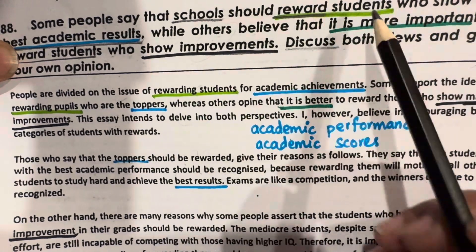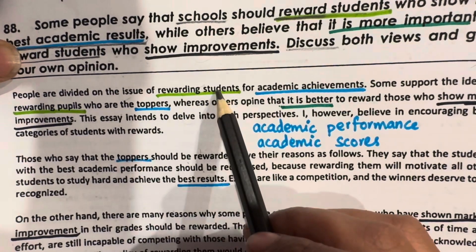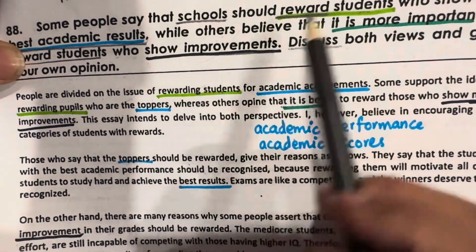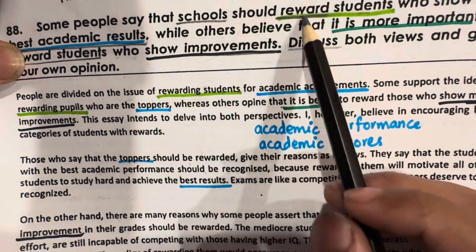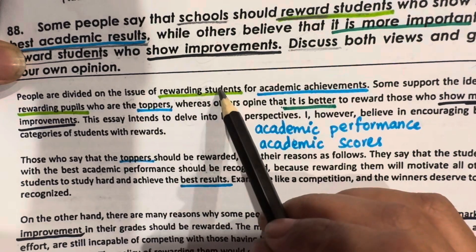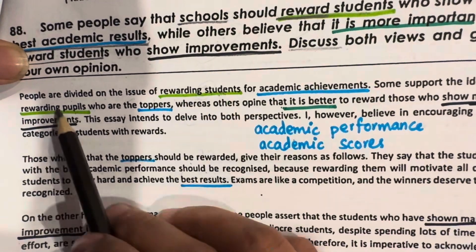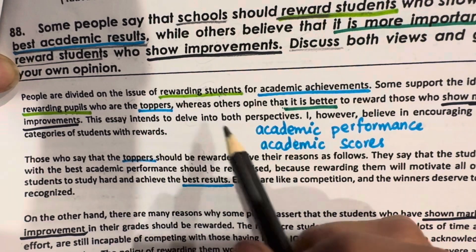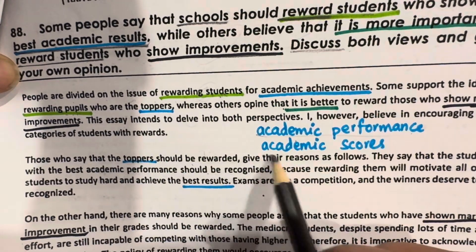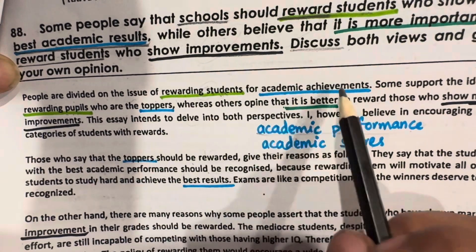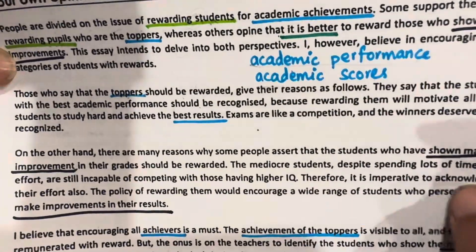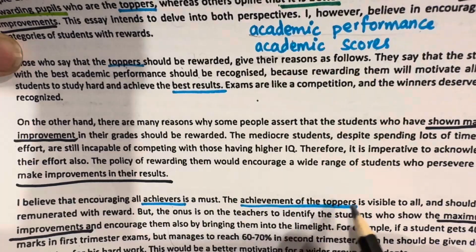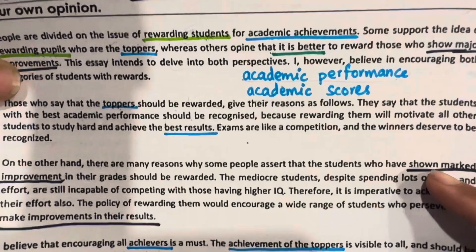Look at the essay. For 'reward students,' you can write 'rewarding students,' and for 'students' you can use 'pupils' — these are synonyms. People are divided on the issue of rewarding students. We have to paraphrase by using synonyms and topic-related vocabulary words. For 'best academic results,' you can write 'academic performance,' 'academic scores,' 'best results,' 'academic achievements,' or 'toppers.' Those who show the best academic results are called toppers or achievers. These are topic-related vocabulary words.